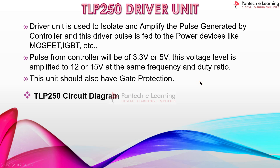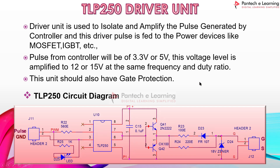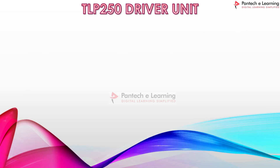This driver unit also has a gate protection unit. Let's see the circuit diagram for the TLP 250 driver board. Here a single-leg — a single pulse circuit diagram — is shown. The driver IC is the TLP 250, and there is a Darlington pair using a transistor, which acts as an amplifier. The 18-volt Zener is acting as gate protection; reverse voltage will be protected. The pulse from the controller is given to the input, and the pulse output can be derived from across the Zener.